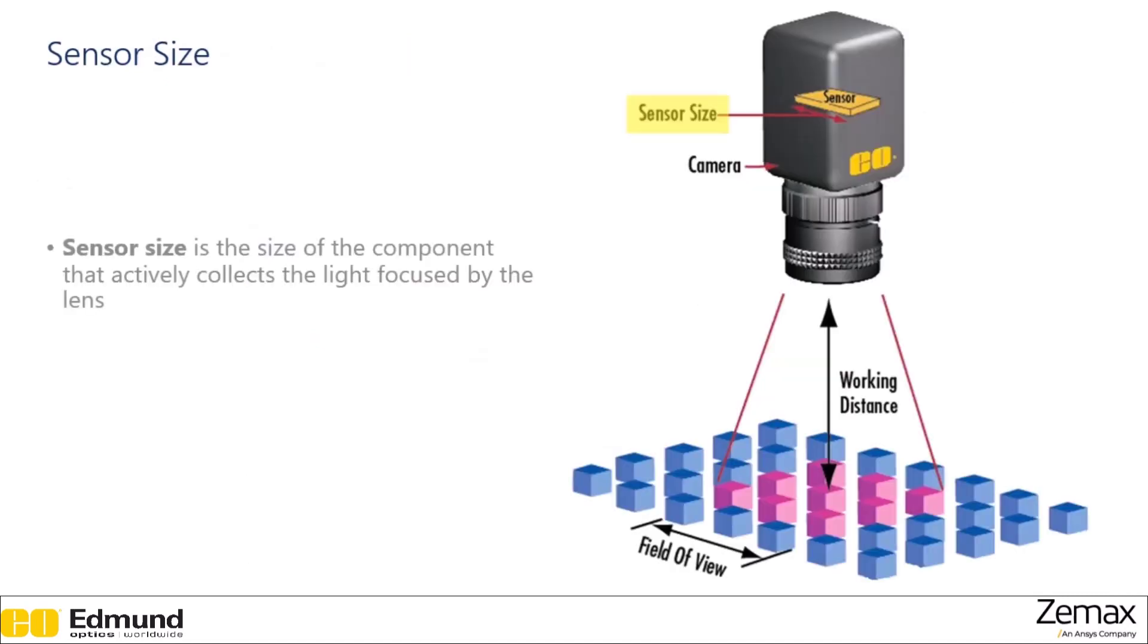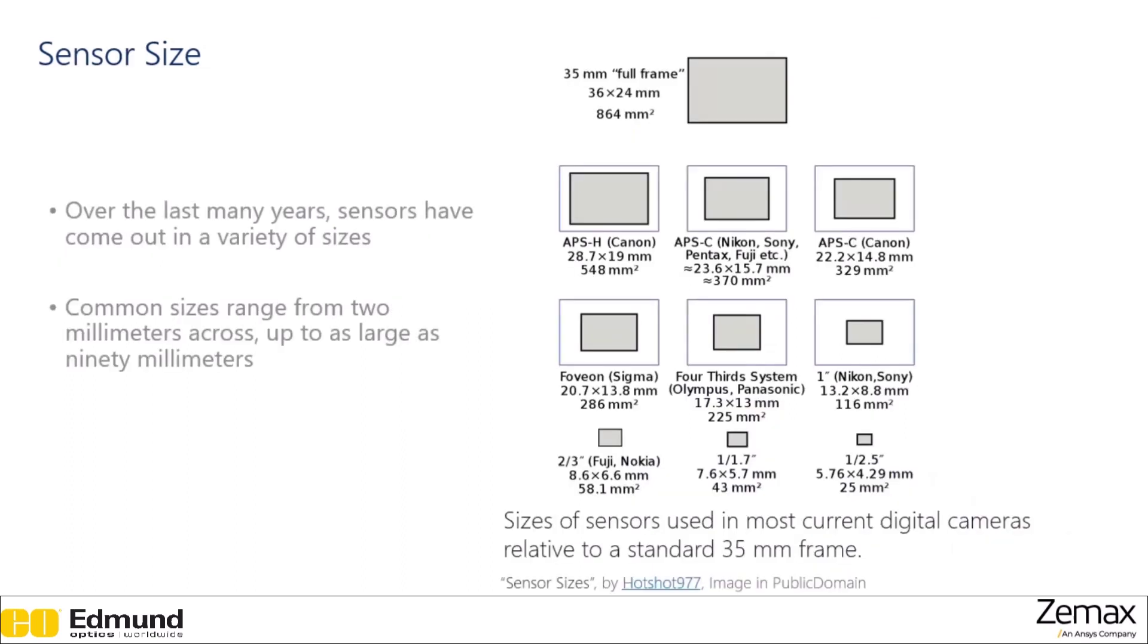Sensor size is the size of the component that is actively collecting the light that's being focused by the optical system. The sensor is often one of the more expensive components in the camera, so it is important to optimize what you're doing with your sensor to get your best quality images. There are a wide variety of sensor sizes. They can come from as small as 2 millimeters up to as large as 90 millimeters. You want to make sure you're maximizing what you can get out of the sensor.